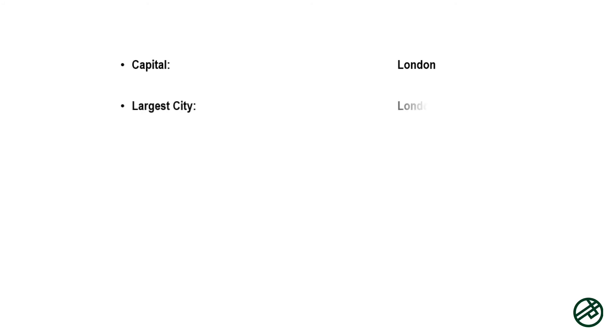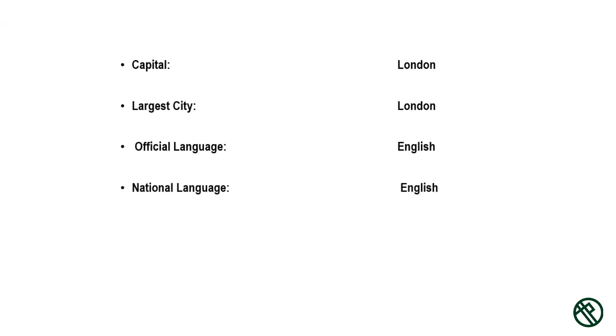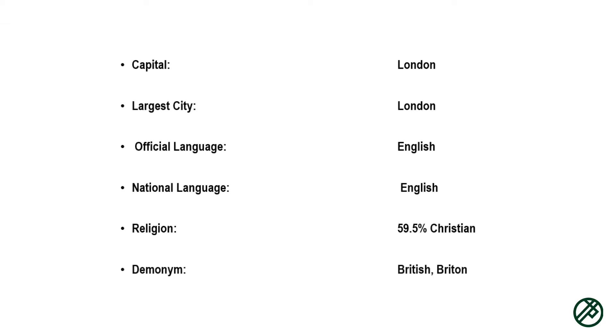General information. Capital: London. Largest city: London. Official language: English. National language: English. Religion: 59.5% Christian. Demonym: British, Britain.